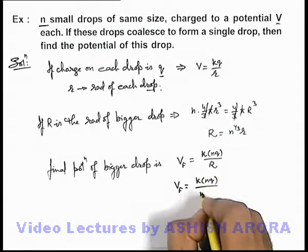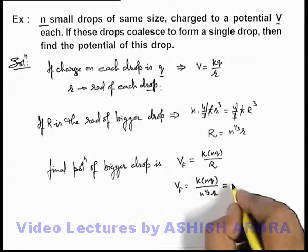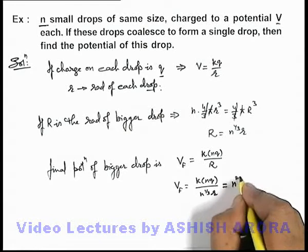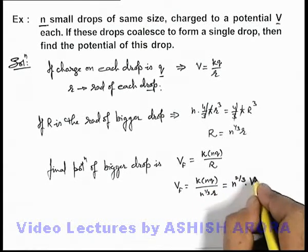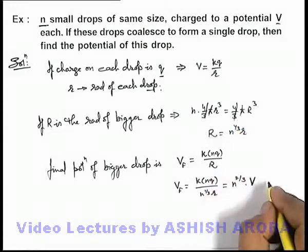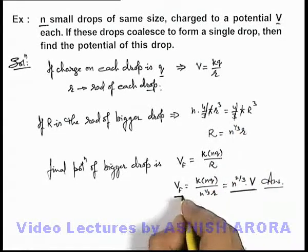In this situation, n/n^(1/3) is n^(2/3), multiplied by kq/r, which can be written as V, the potential of the individual drop. This is the answer to the problem: the final potential of the bigger drop is n^(2/3)V.